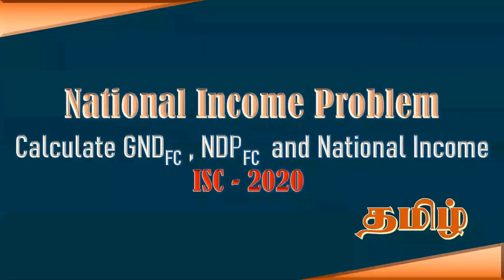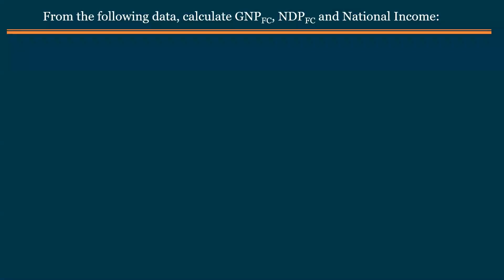National Income Problem, ISE 2020 Board Examination. From the following data, calculate: Gross National Product at Factor Cost, Net Domestic Product at Factor Cost, and National Income.